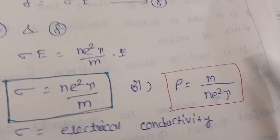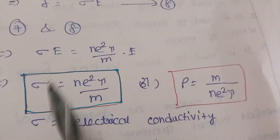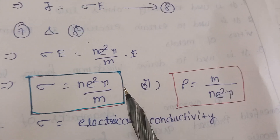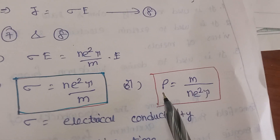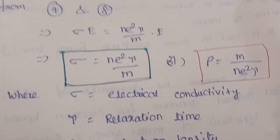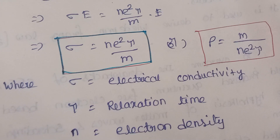Using this, we can write an expression for resistivity, because conductivity and resistivity are reciprocals of each other. Then ρ = m / (ne²τ), where tau is the relaxation time.